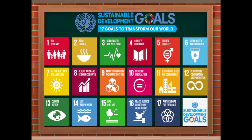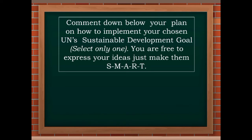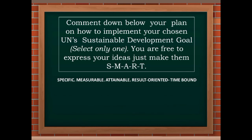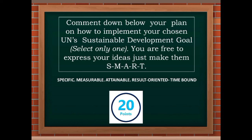These are the 17 goals to transform our world by the United Nations. Comment down below your plan on how to implement your chosen United Nations Sustainable Development Goal. Remember, select only one. You are free to express your ideas — just make them SMART: Specific, Measurable, Attainable, Result-oriented, and Time-bound. It is equivalent to 20 points. You may now begin. Good luck!